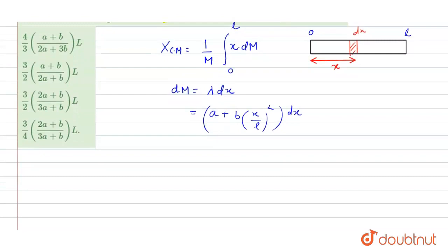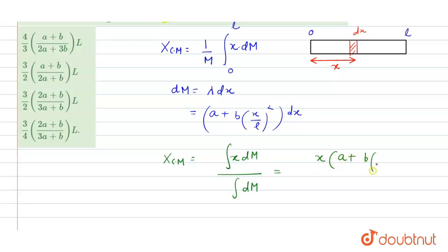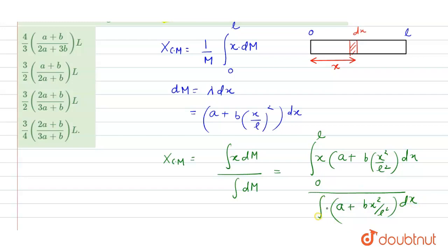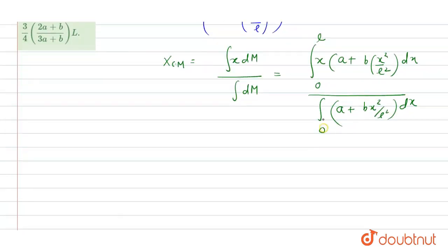Now we solve this equation. The center of mass equals the integral of x dm divided by the integral of dm. Substituting dm: the numerator is the integral from 0 to l of x times (a + bx/l²) dx, and the denominator is the integral from 0 to l of (a + bx²/l²) dx.